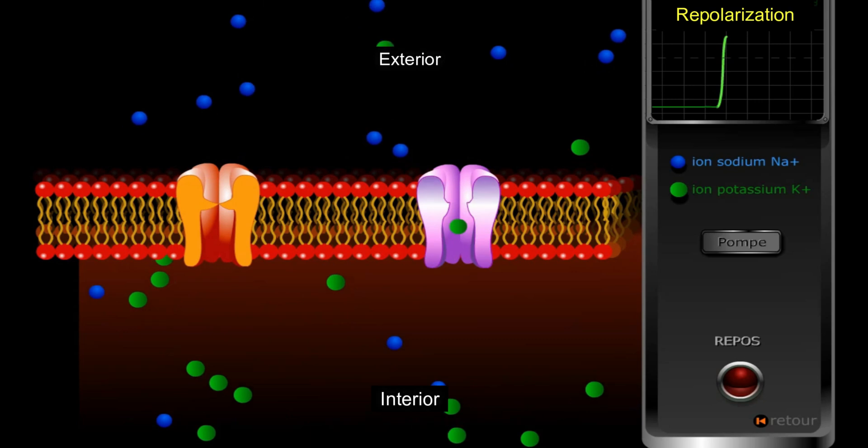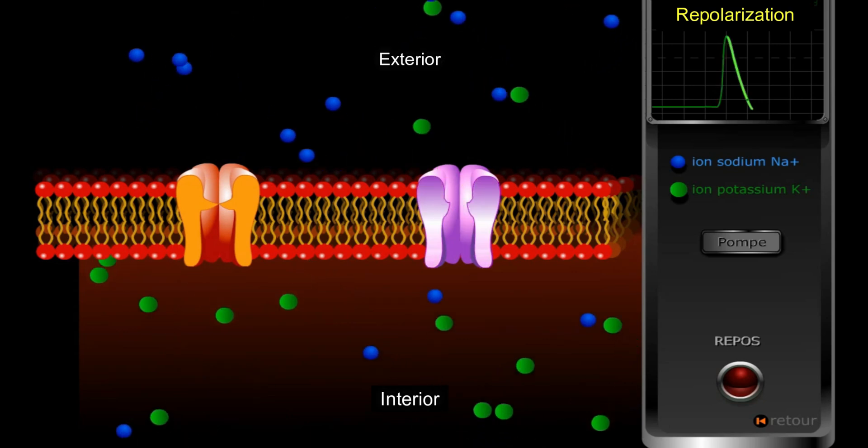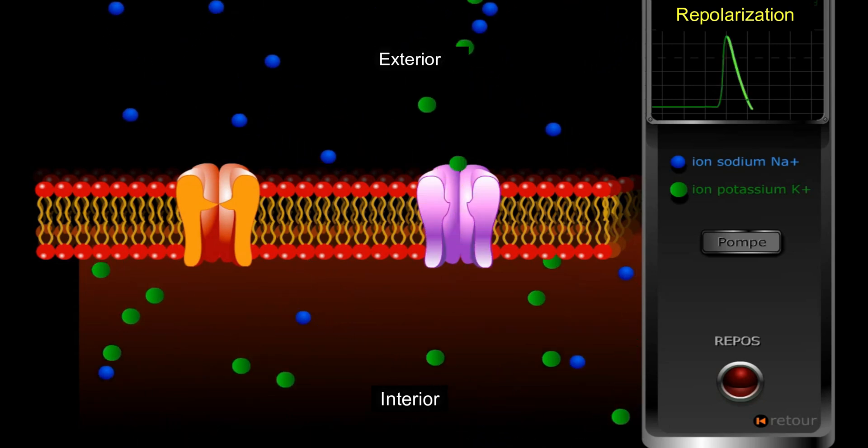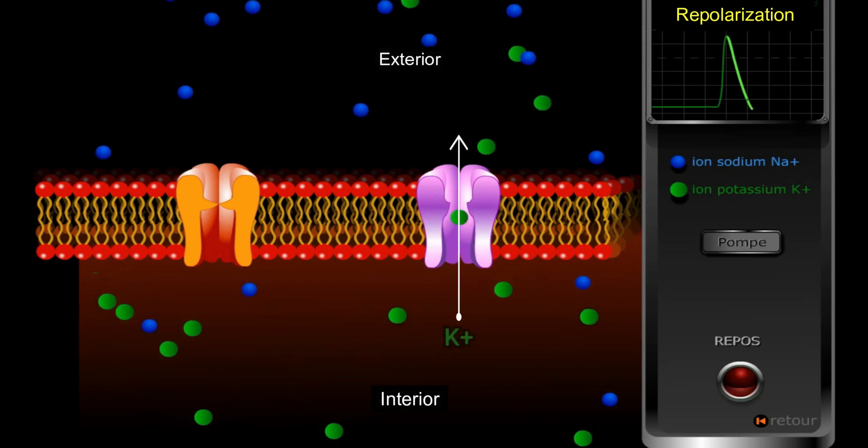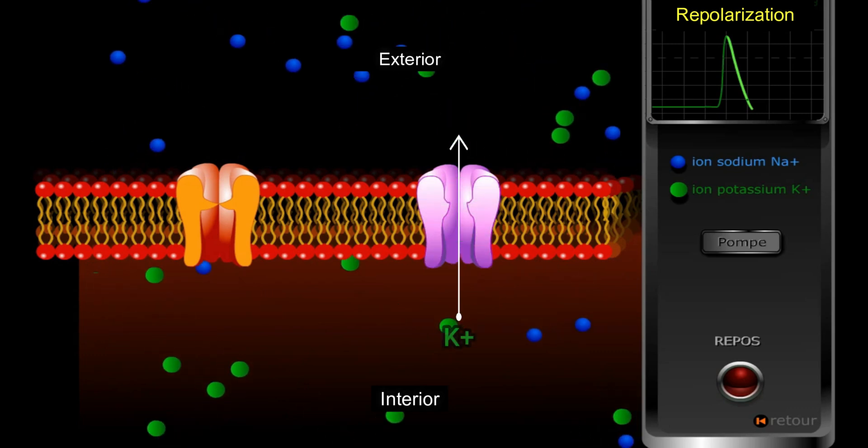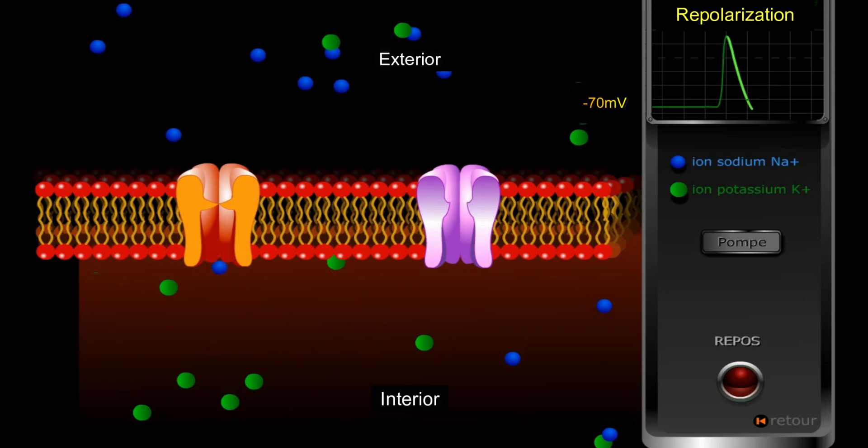In repolarization stage, the Na plus gated channels close, and the K plus gated channels open, allowing the outflow of K plus ions. This is revealed by the decrease of the membrane potential to minus 70 millivolts.